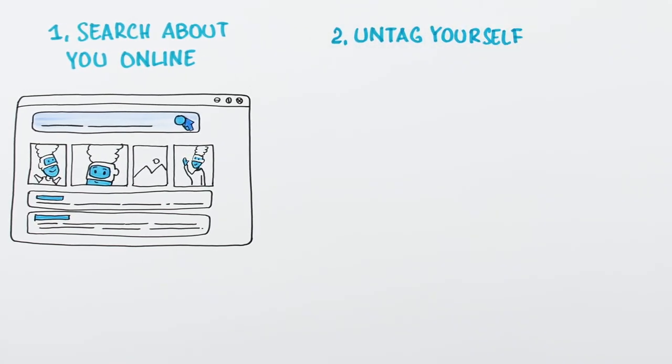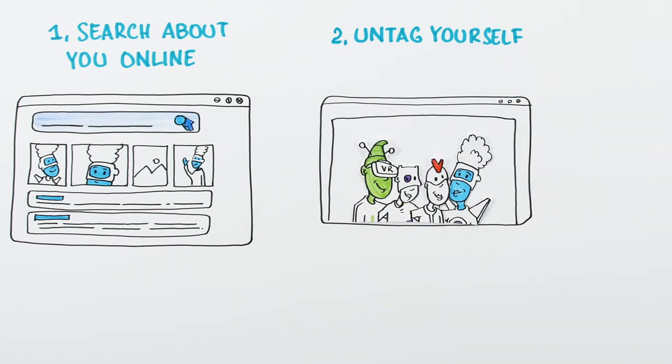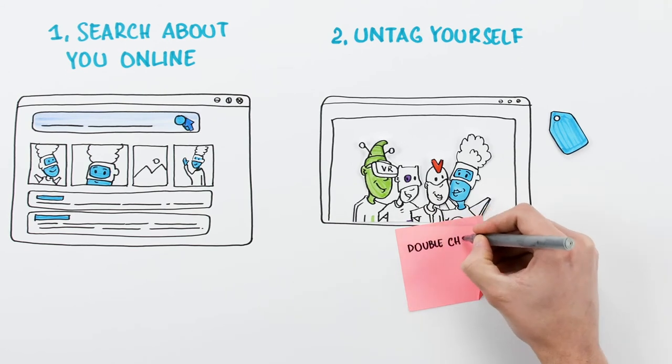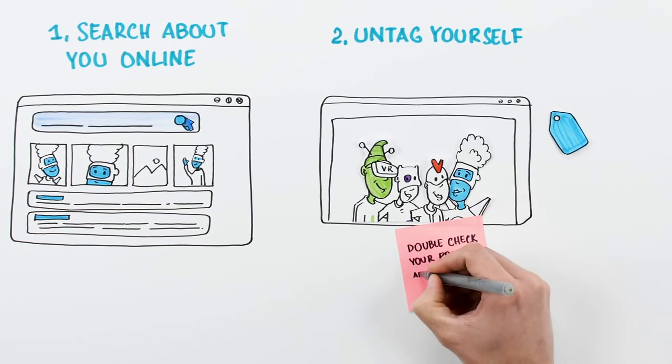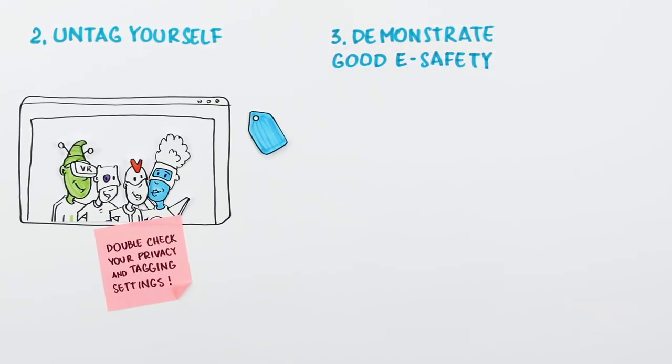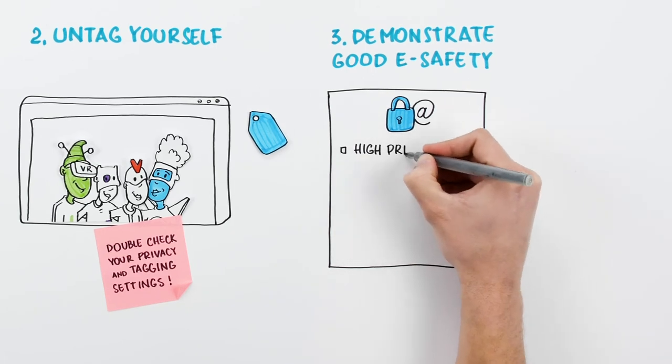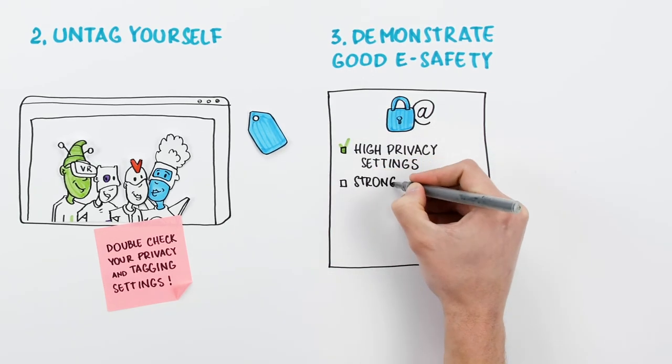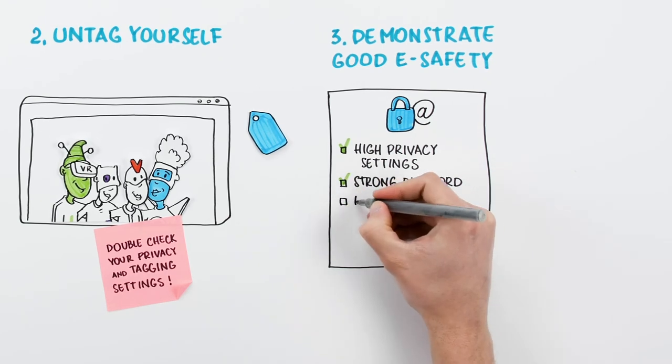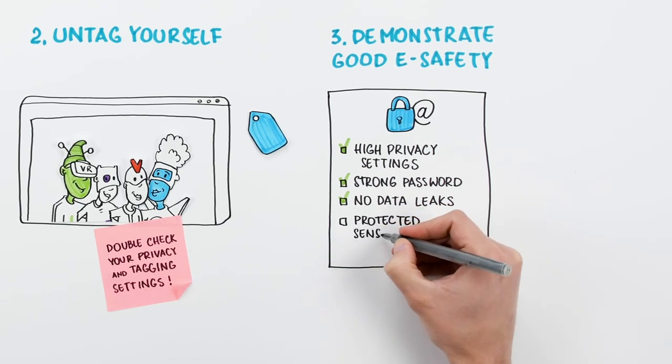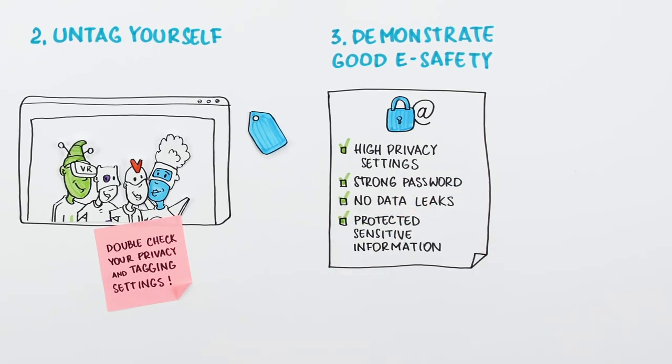Untag yourself or contact the people posting about you if you don't agree with the content or context in which your photo or information appeared. Double check your privacy and tagging settings on social media accounts. Demonstrate good e-safety by making sure your privacy settings on your personal accounts are high and ensure you have a strong password that you don't share with others. Any data leaks may potentially harm your online reputation and disclose sensitive private information.